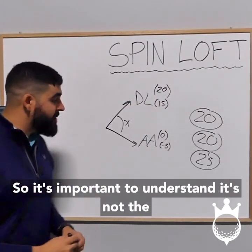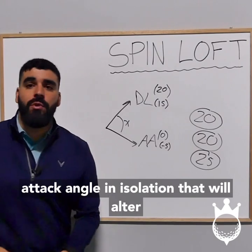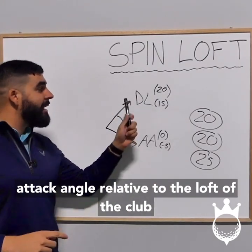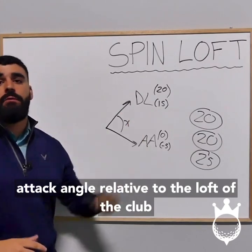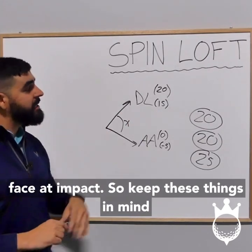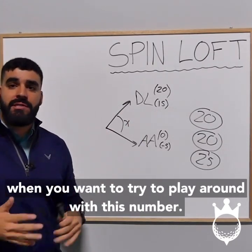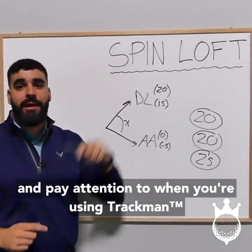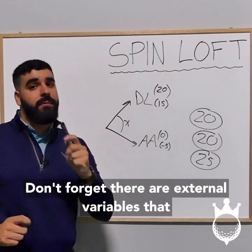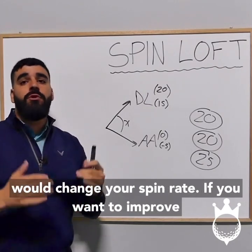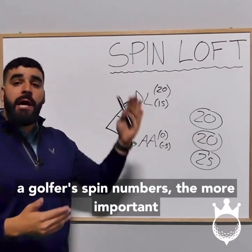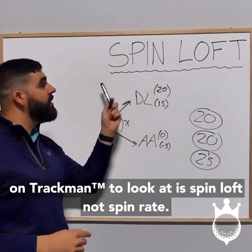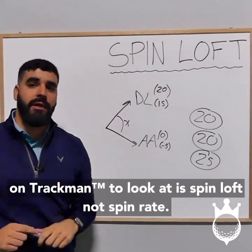It's important to understand it's not the attack angle in isolation that will alter the spin on the golf ball — it is the attack angle relative to the loft of the club face at impact. Keep these things in mind when you want to play around with this number. This is an extremely important thing to remember when you're using TrackMan. Don't forget there are external variables that would change your spin rate. If you want to improve a golfer's spin numbers, the more important number to look at on TrackMan is spin loft, not spin rate.